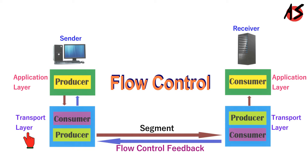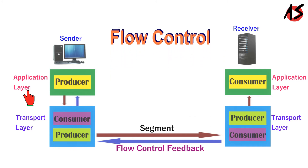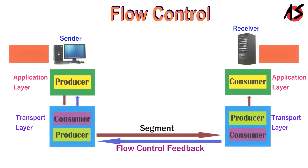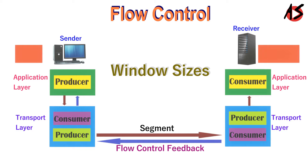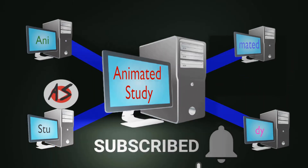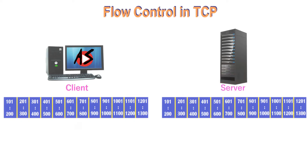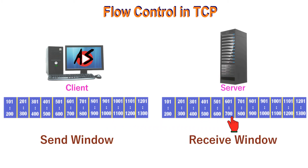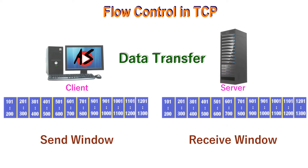The sending TCP controls the sending process. To achieve flow control, TCP forces the sender and the receiver to adjust their window sizes. Here we show how the send and receive windows are set during the connection establishment phase and how their sizes will change during data transfer.